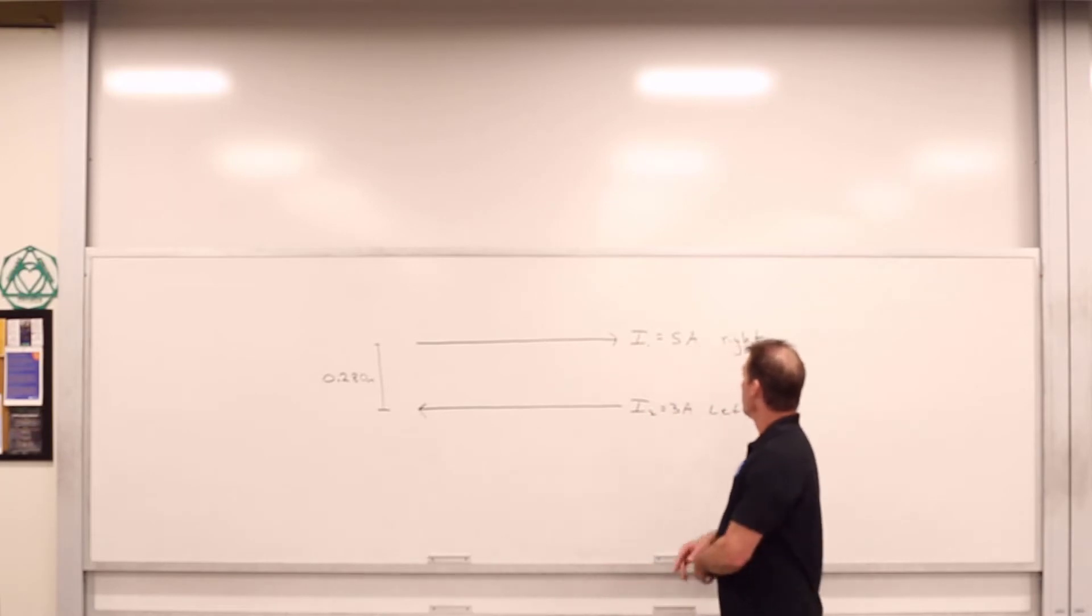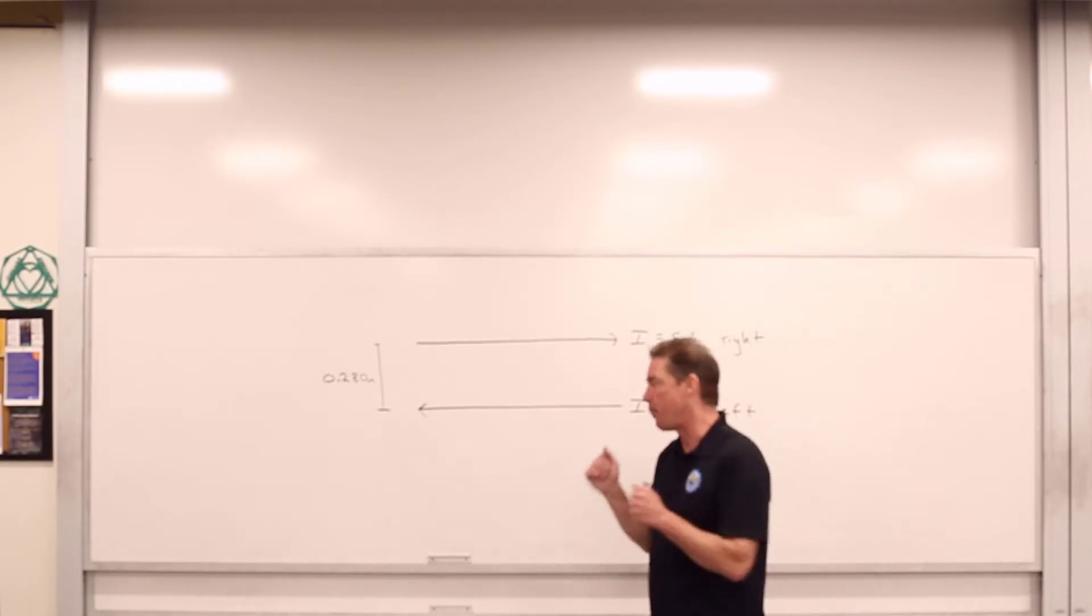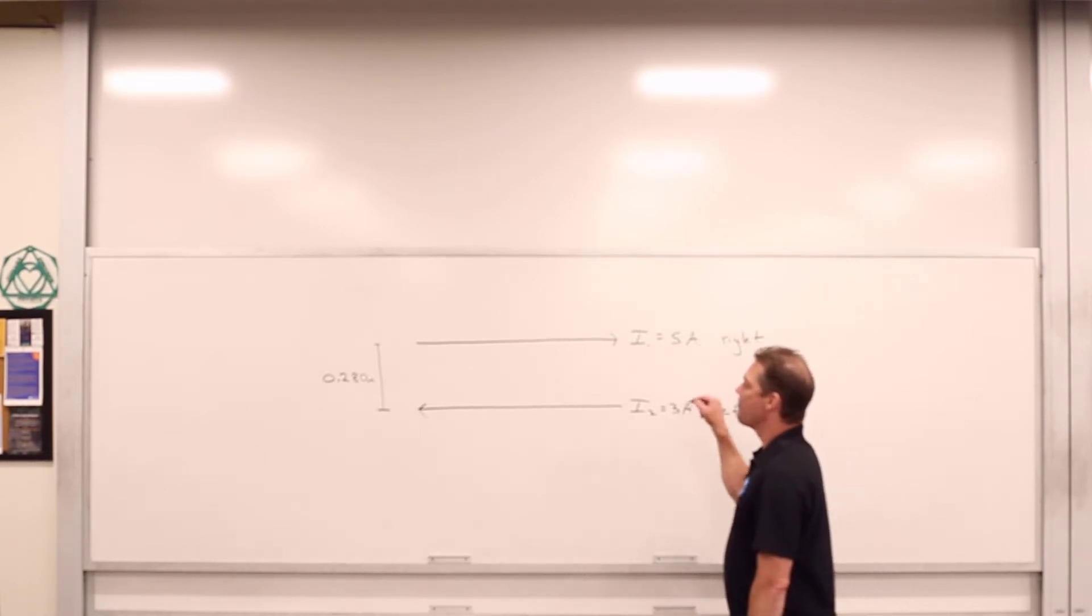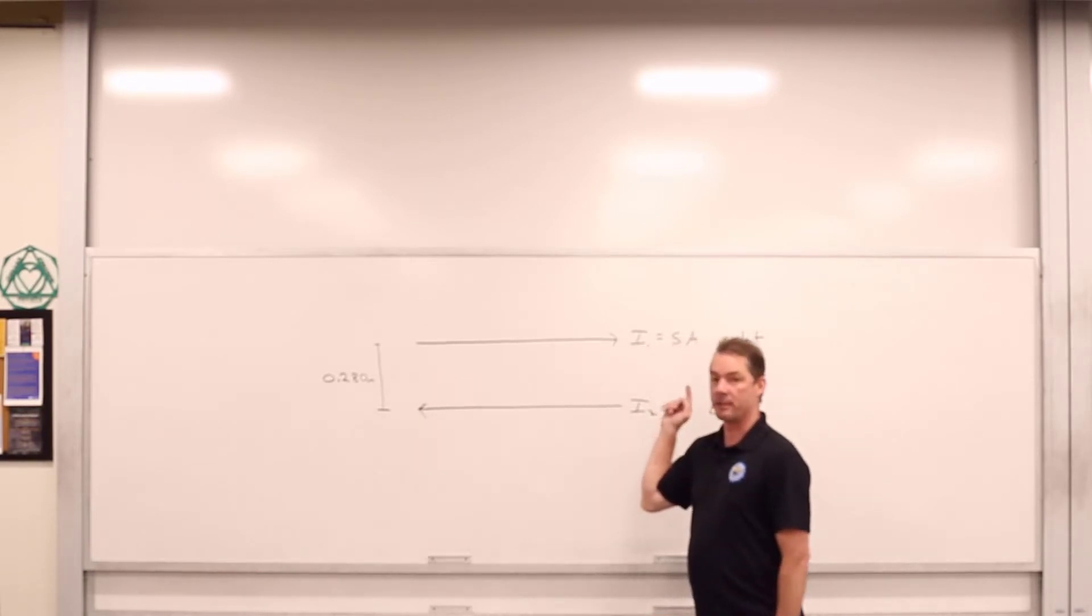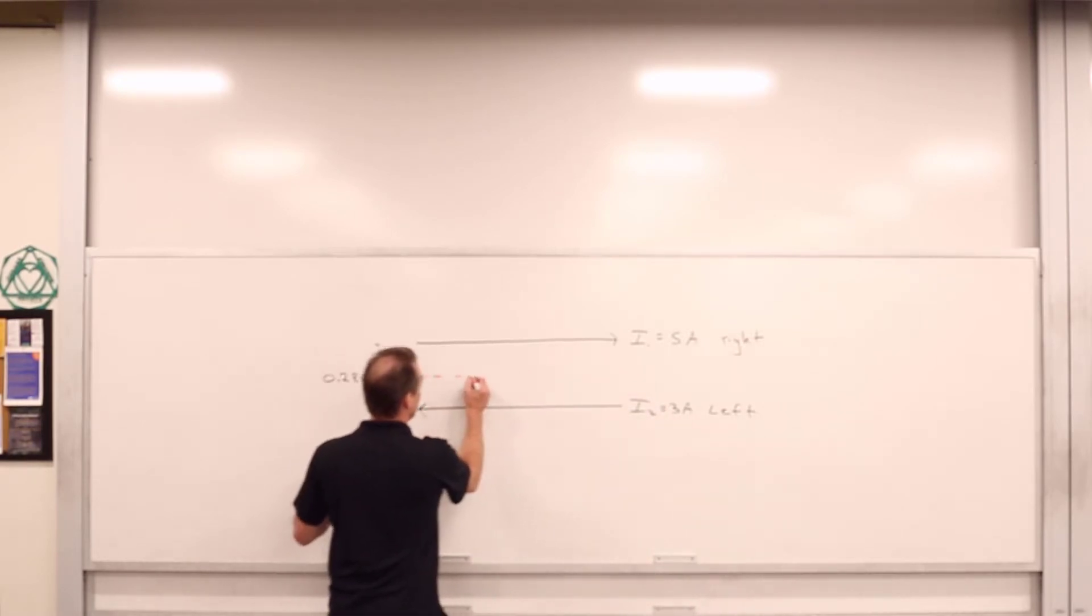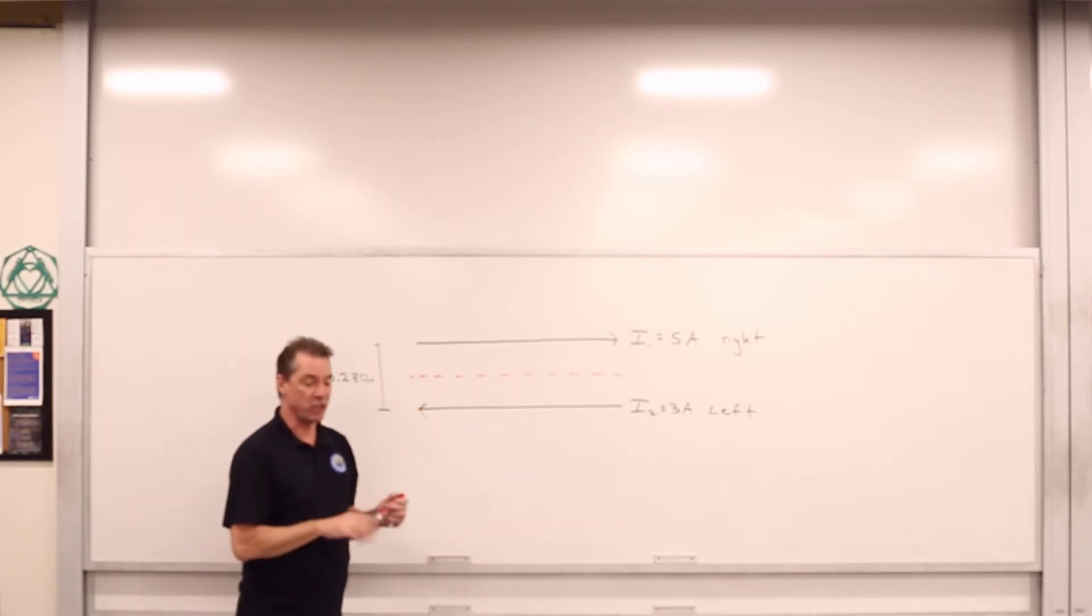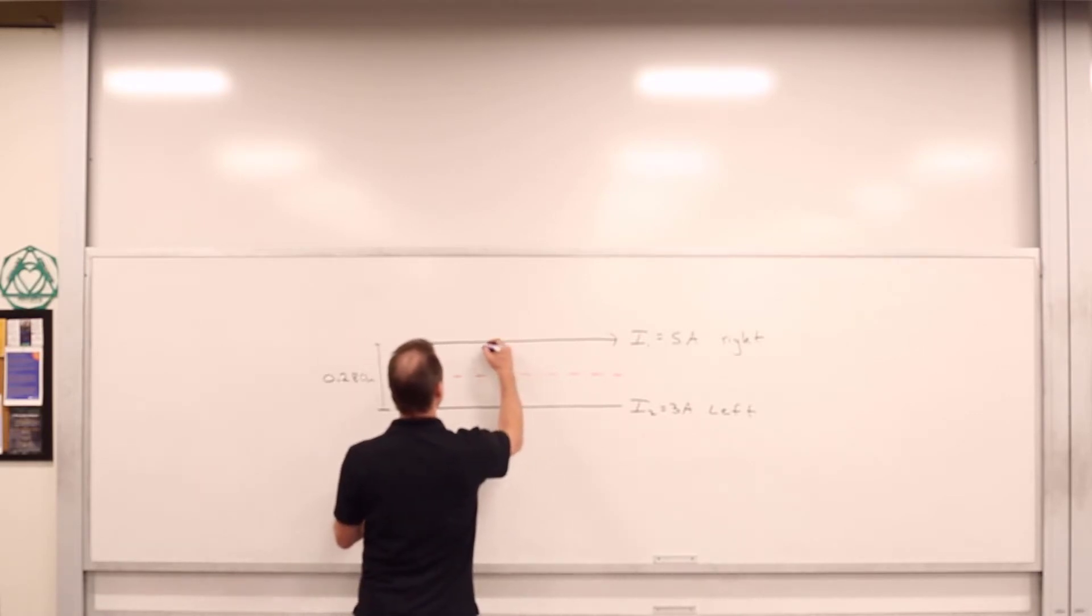We've got two current-carrying wires. One has a current of 5 amps to the right, one has a current of 3 amps to the left. We're going to insert these long, straight current-carrying wires so we can utilize the infinite approximation. And we are asked explicitly, what is the magnetic field as a magnitude and direction directly between these two wires? So somewhere right along here, we want to know what is the magnetic field in terms of its direction and its magnitude.